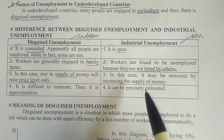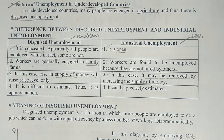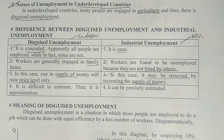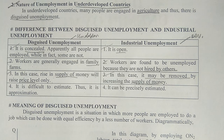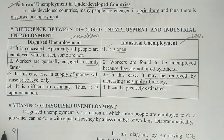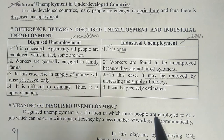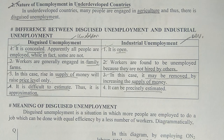In industrial unemployment, when money supply increases, it may remove unemployment because increased money supply leads to investment, more production, and unemployment is finished. A fourth difference: disguised unemployment is difficult to estimate — we don't know exactly how much there is. But industrial unemployment can be precisely estimated with a clear-cut figure.